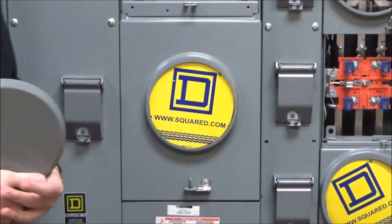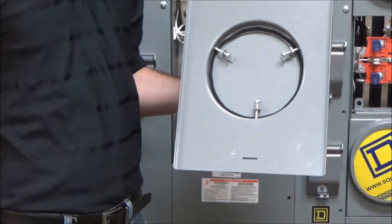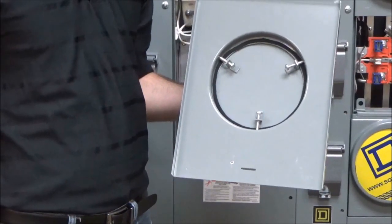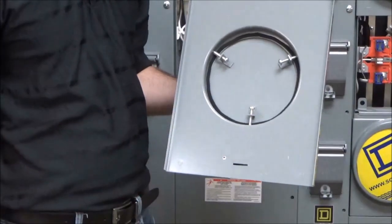The first step is going to be to remove the meter cover. Now we have the metal meter socket cover installed by tightening the three screws inside the meter cover.